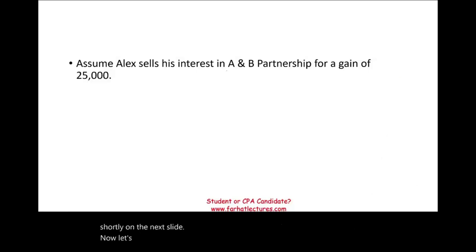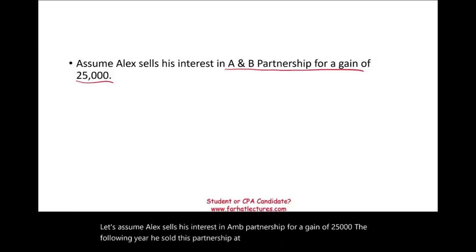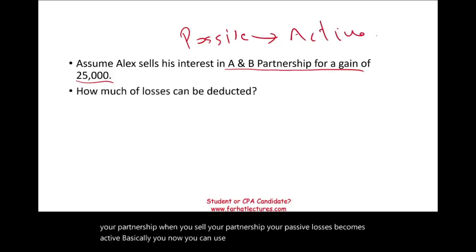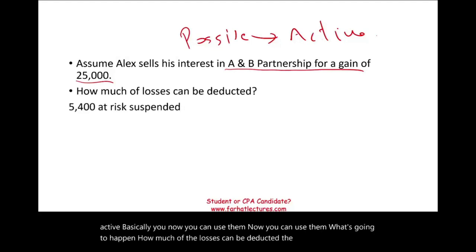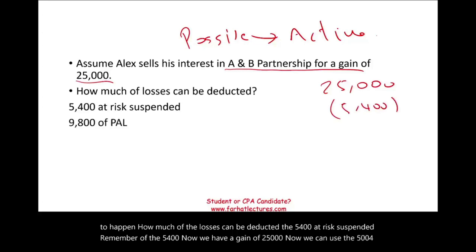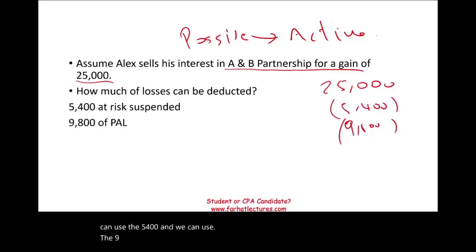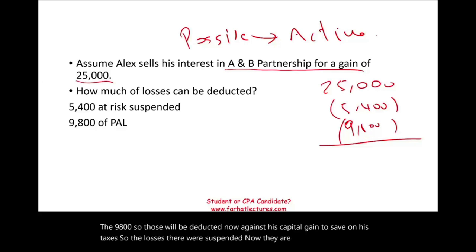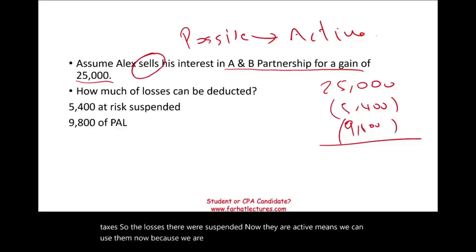Now let's assume Alex sells his interest in A and B partnership for a gain of $25,000 the following year. When you sell your partnership interest, your passive losses become active — now you can use them. The $5,400 suspended under the at-risk rule and the $9,800 suspended under PAL can now be deducted against his capital gain to save on taxes.